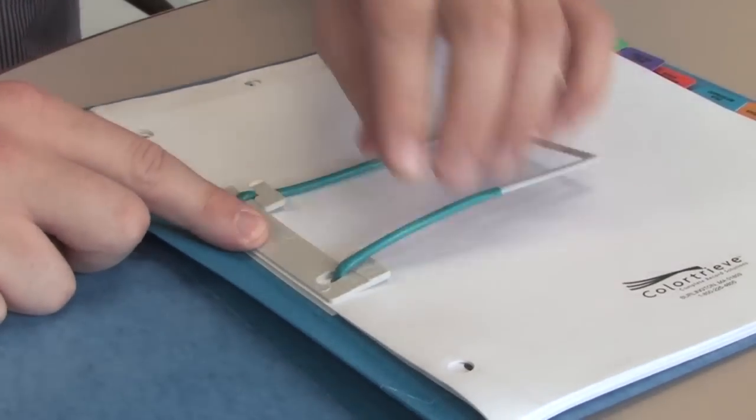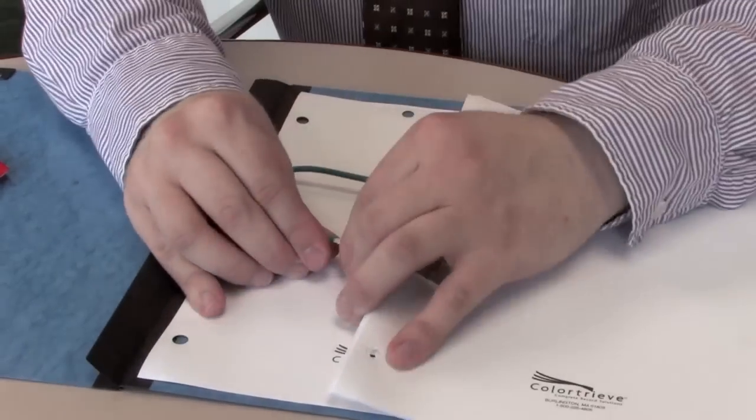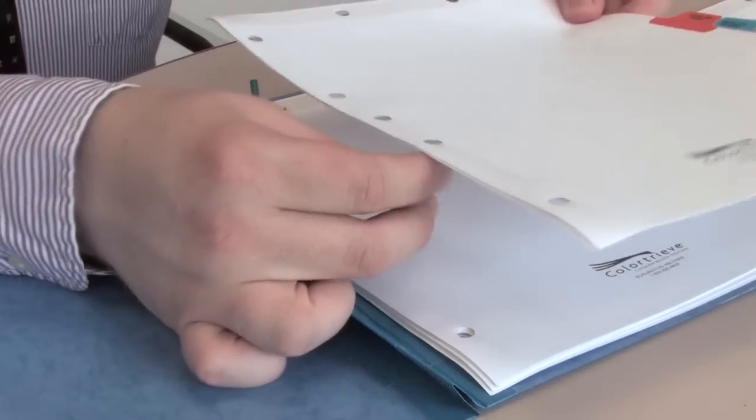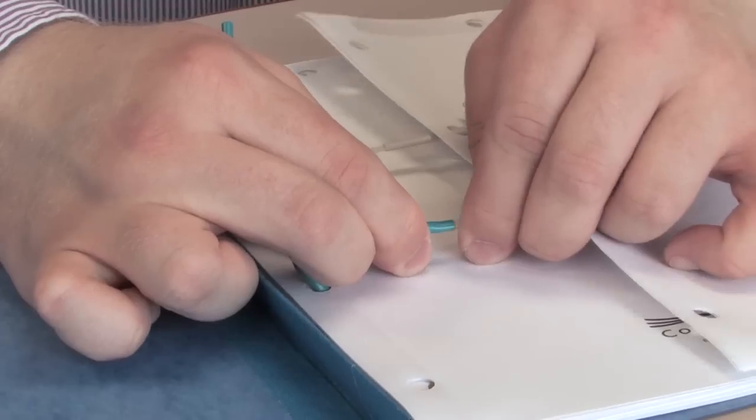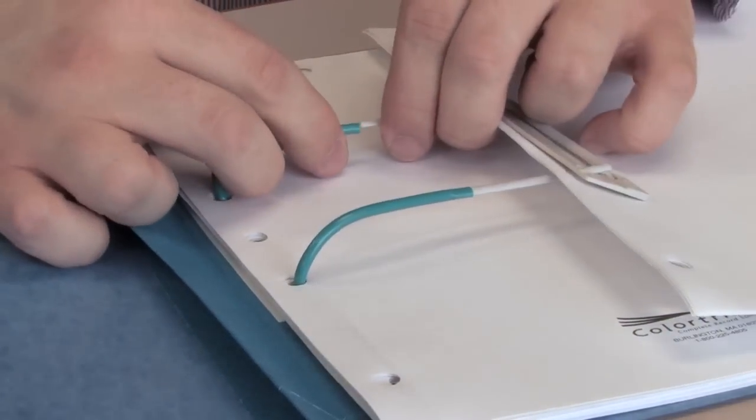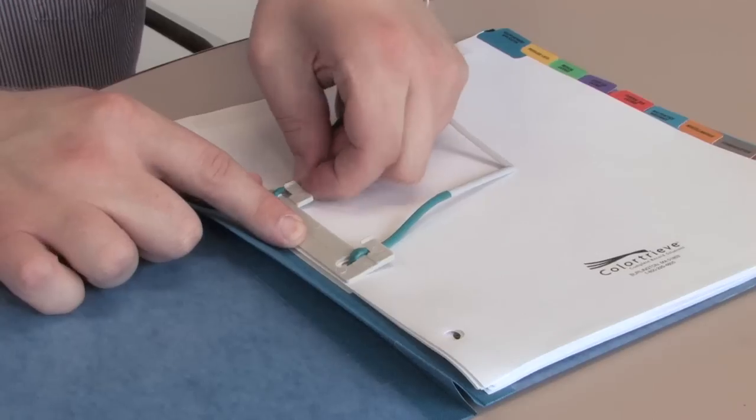To add or remove documents from your folder, simply detach the extension piece from the tubing, insert or remove the documents you need, and then reattach the extension piece. Tuck the tubing under the tabs as before, and there you have it.